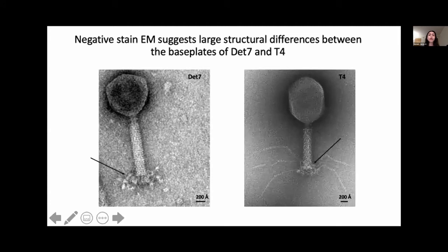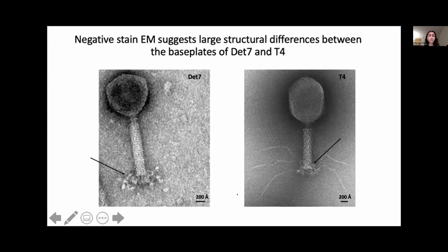Phage T4 is a structurally well-studied myovirus that exhibits a contractile tail and base plate. Comparing negative EM images of phage DET7 and T4, you can see a divergence in the structure of the phages at the base plates, pointed out here.